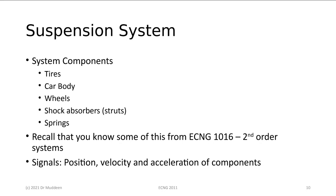The expensive suspension systems adapt depending on the road conditions. Some systems on more expensive vehicles learn about the type of road you're driving on — if the road is fairly smooth, the suspension will relax, changing the behavior of the shock absorbers. In other cases, if road conditions change drastically, the suspension system may increase compression in the shock absorbers and lift the car higher off the road. So you have all of these things — that is the whole signals and systems concept.